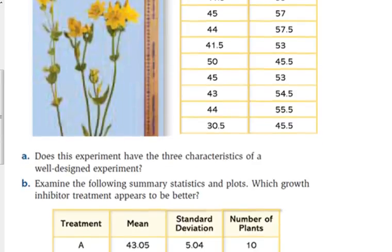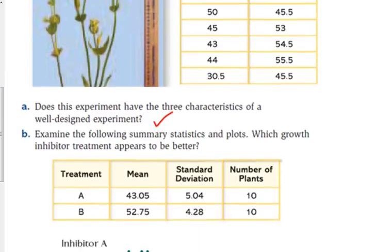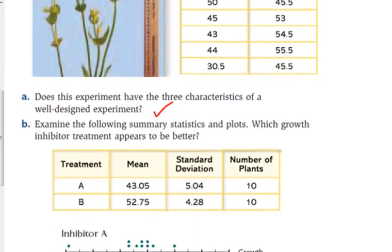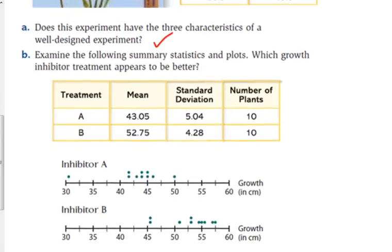So, we just answered question A. It does have the three characteristics. We're good there. Now, here's the cool thing. They give us some summary statistics here. And they give us a, it's not a box plot. This is a dot plot. It's kind of designed to be like a histogram. You just don't actually have the bars. You have dots that represent the data points.